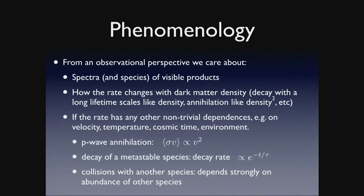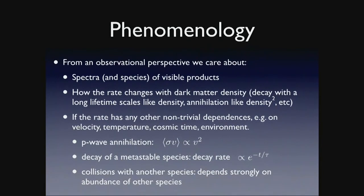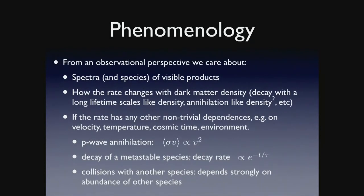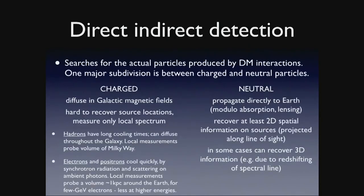If I want to know where to look, I need to know how the rate changes with dark matter density. Do I care about places where the dark matter density is especially high? Does the rate have any other important dependence? Somebody asked a question yesterday about P-wave annihilation, which is velocity-suppressed — the annihilation rate scales like V² rather than being a constant. If this is the case, I'd better be looking at regions where the dark matter is moving pretty quickly. Similarly, if I have some decay with a long lifetime, I care about that lifetime. So any time you're designing a dark matter search, think about these questions.